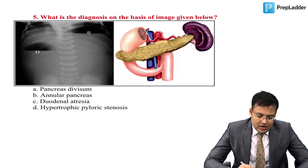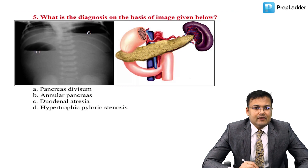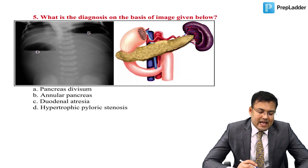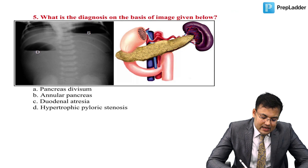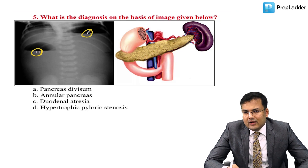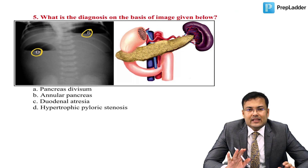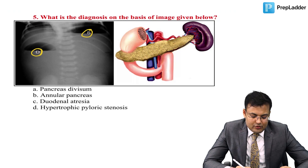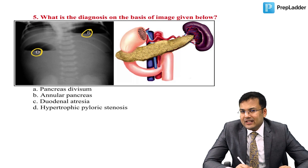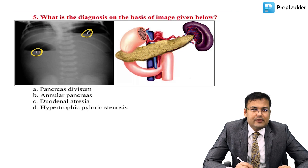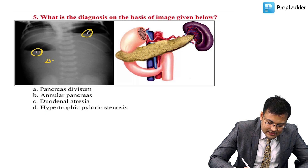Next question: based on the image below, identify the diagnosis. On the X-ray, two bubbles are visible: one labeled 'S' for stomach and one labeled 'D' for the first part of duodenum. This is the double bubble sign.